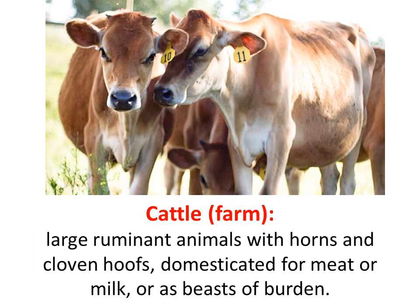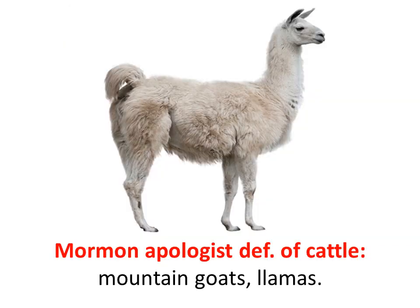What is a cow? We're going back to kindergarten. It is a large ruminant animal with horns and cloven hoofs, domesticated for meat or milk or as beasts of burden. But since there were no cattle in Book of Mormon times, the apologists have had to redefine it. Mormon apologists define 'cattle' in certain papers as mountain goats or llamas, because those actually did exist in Book of Mormon lands and times. Seems pretty ridiculous.